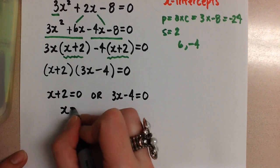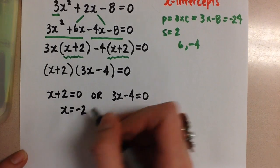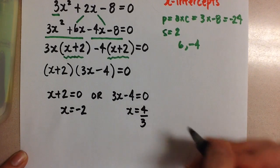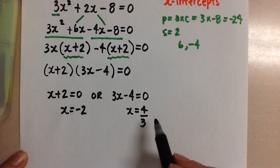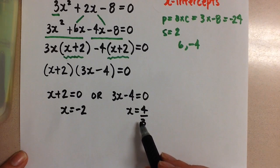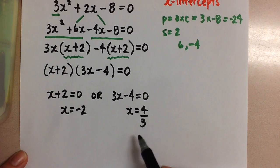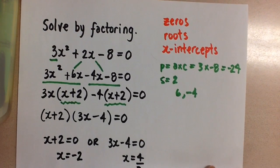And I get x = -2 or x = 4/3. And those are my two solutions for the quadratic equation or my two zeros or roots or x-intercepts.